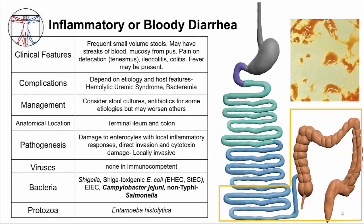Here is the overview framework again for inflammatory diarrhea. Just like for Shigatoxigenic E. coli and Shigella, the terminal ileum and colon are affected. I will focus this discussion specifically on Campylobacter jejuni and non-typhi Salmonella.